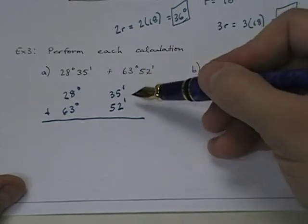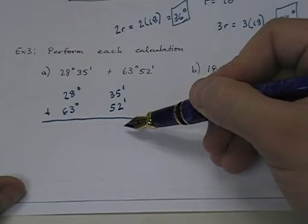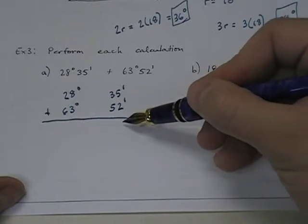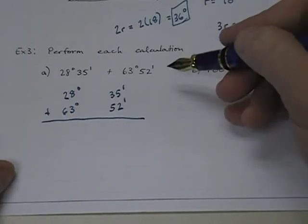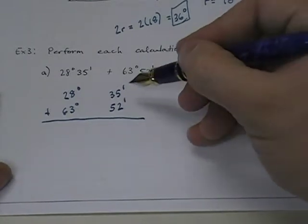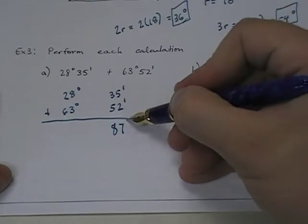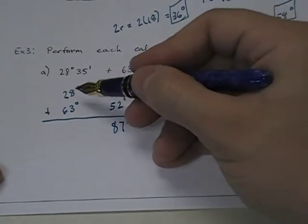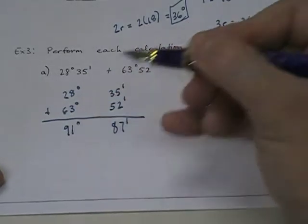And this is the equivalent of saying 5 inches plus 10 inches makes 15 inches. Well, 15 inches is bigger than a foot, and so of course, we would carry some over here into the foot column. Very similar to that. And so I say, what is 35 + 52? And I get 87. That's 87 minutes. And then 28 + 63 is 91 degrees.